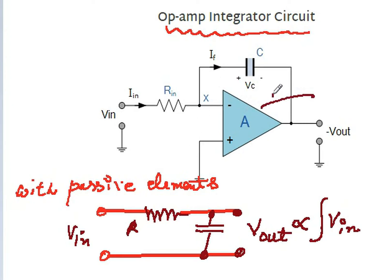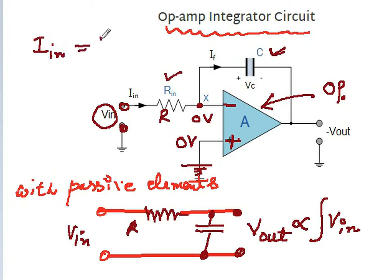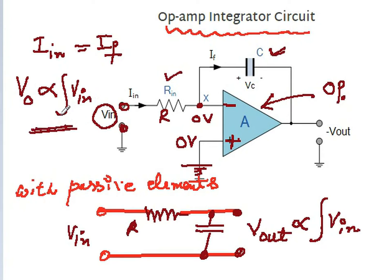Now we are using an operational amplifier, which is an active device. The negative terminal input is given here. This is the input resistor R. The plus terminal is grounded at zero volts, so this is virtually ground. This is the capacitor. This circuit is also able to give integration. Here, the input current equals the feedback current through the capacitor, and the output voltage is proportional to the integral of the input voltage.